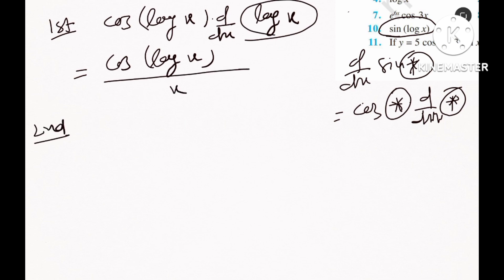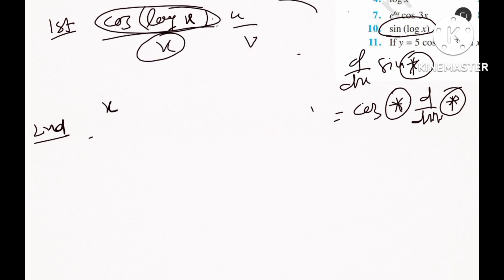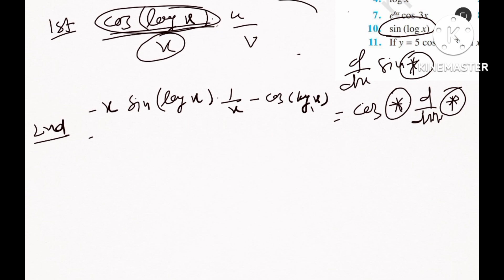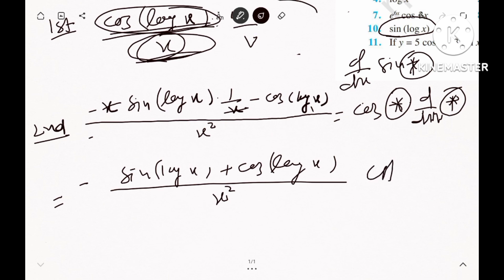For the second derivative of sin(log x), we differentiate cos(log x) divided by x. There are two variables, so we use the u by v quotient rule. After applying the rule and cancelling x, taking minus common and simplifying, we get: minus sin(log x) plus cos(log x), all divided by x squared. That is the final answer for number 10.